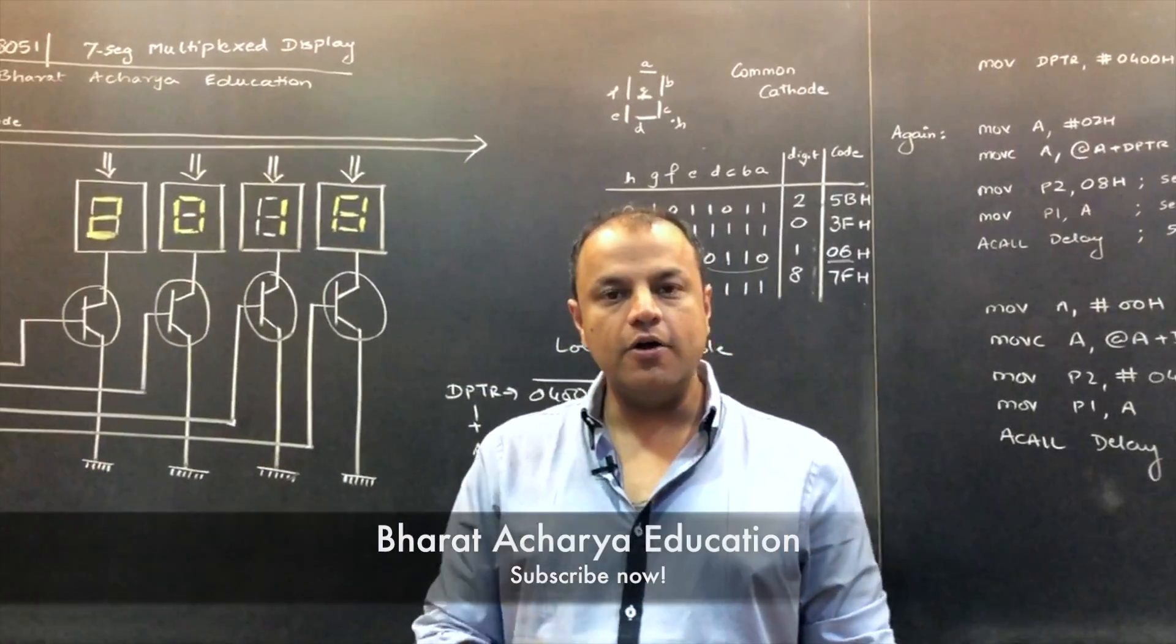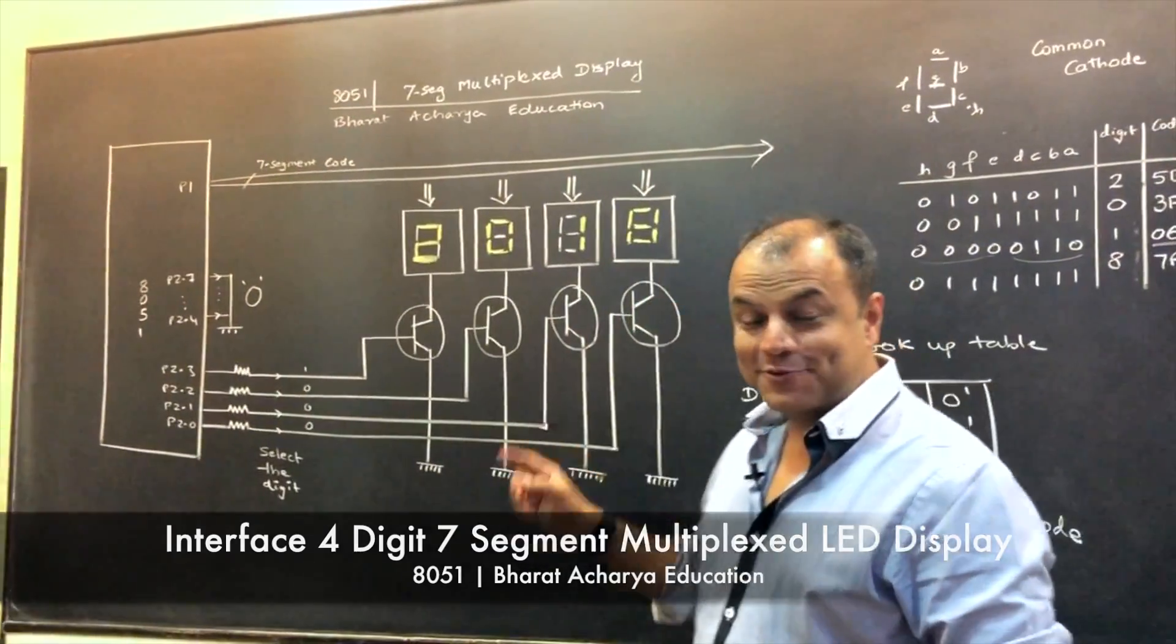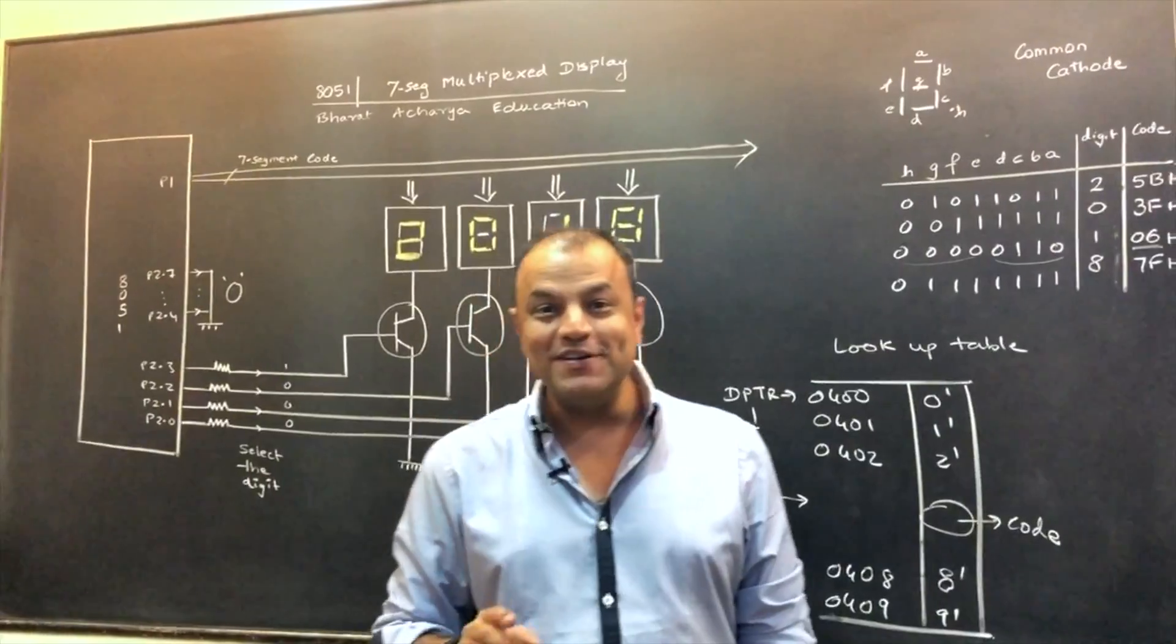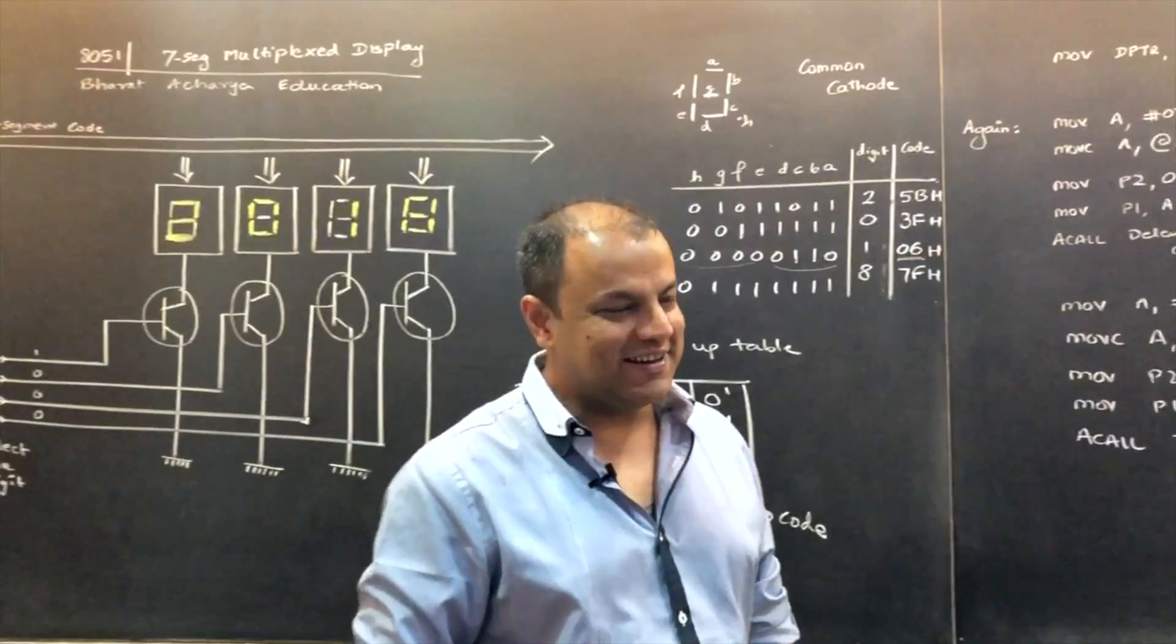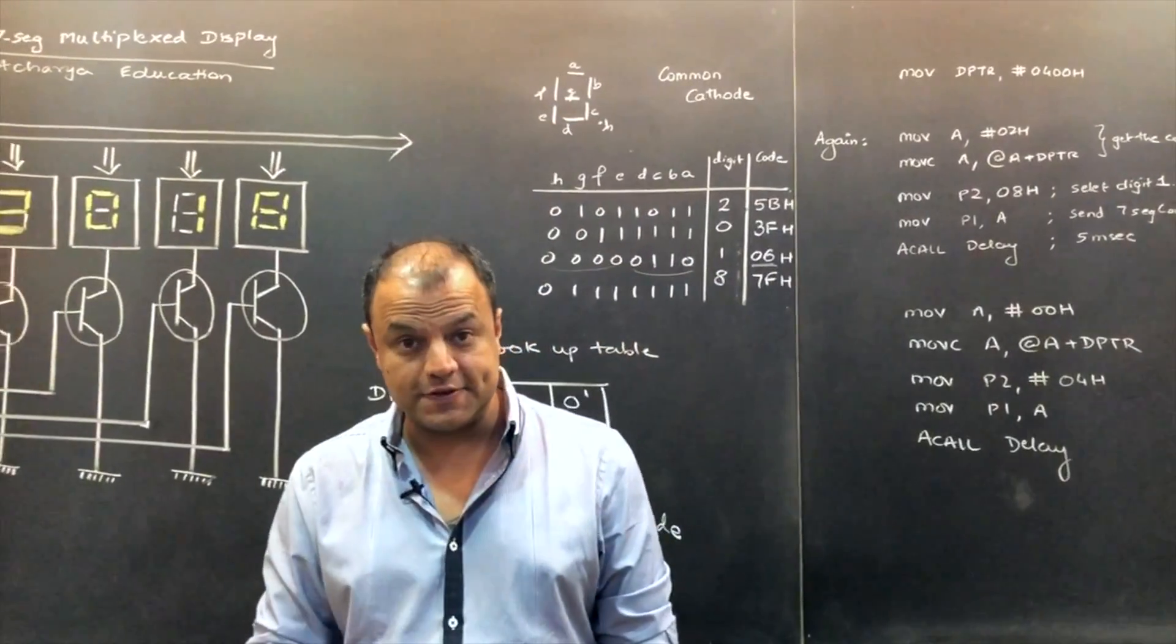So in today's video, we're going to learn how to interface a four-digit seven-segment LED display in a multiplex form to 8051. Yeah, big words. So you may think it's going to be something very crazy. It's not. It's pretty simple and it's very interesting.